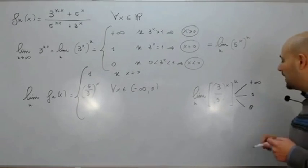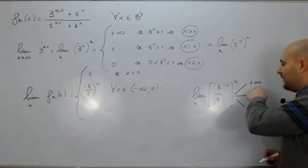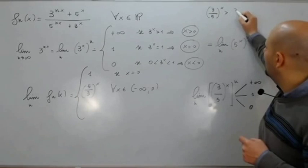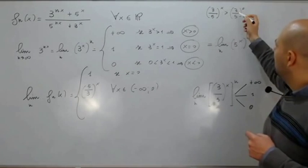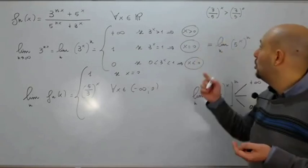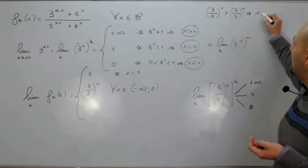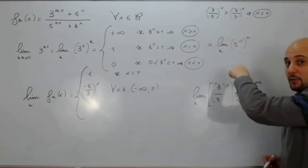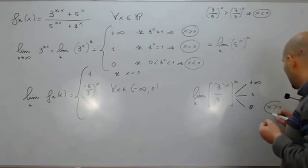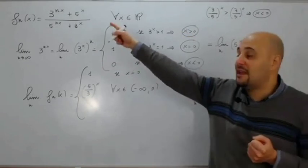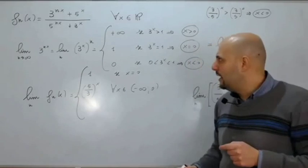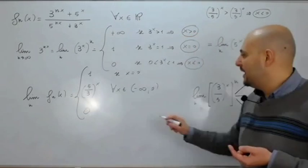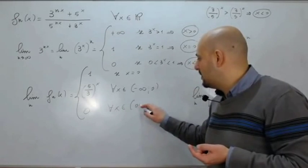Noi prenderemo solamente il caso in cui valga 0. Perché? Perché (3/5)^x tutto alla n vale +∞ se a, ovvero (3/5)^x, è maggiore di 1, cioè maggiore di (3/5)^0. Ma questa disequazione esponenziale ha base minore di 1, quindi dobbiamo invertire il verso: siamo nella condizione x < 0. Varrà invece 0 se (3/5)^x < (3/5)^0, quindi per x > 0. È solo questa la condizione che stiamo considerando, avendo supposto che 3^(nx) e 5^(nx) tendono entrambi all'infinito. Quindi il limite viene 0 per ogni x appartenente all'intervallo (0, +∞).